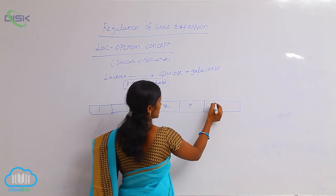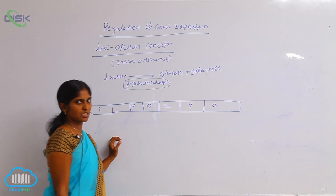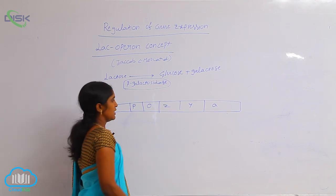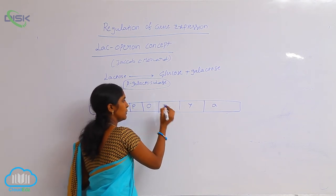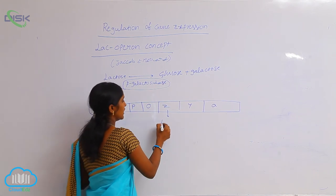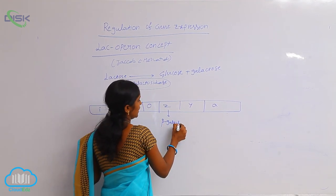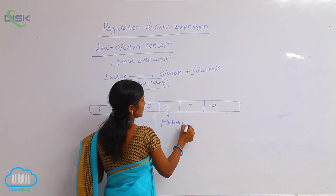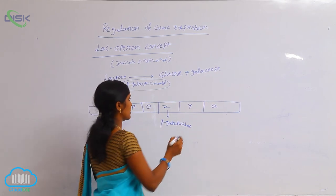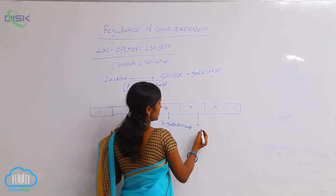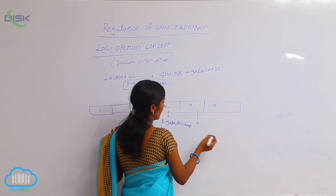Three structural genes are present: Z, Y, and A. The Z gene codes for the beta-galactosidase enzyme, which is involved in lactose metabolism. The Y gene structural gene is responsible for production of...